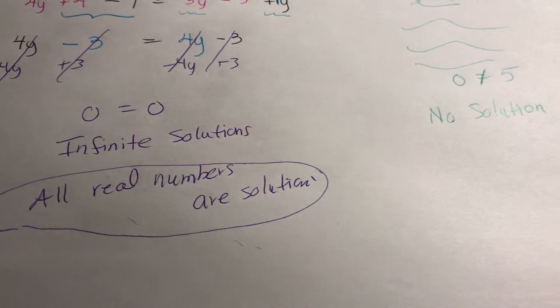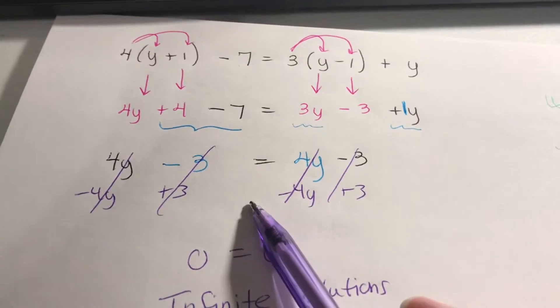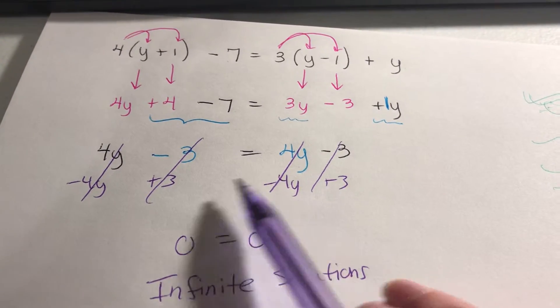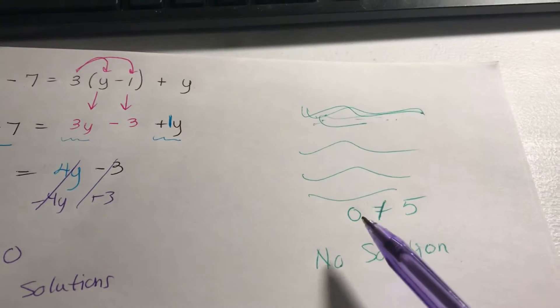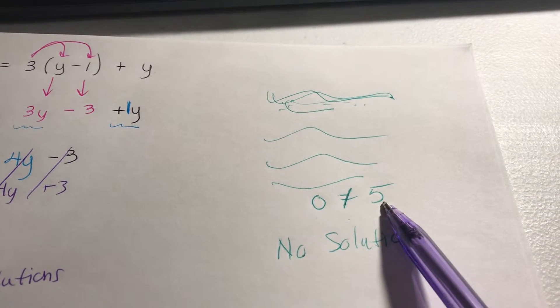All right and just so you know if you did like all of this work but like the 4y's cancel but maybe you had another number over here. Let's say when you did it you got 0 on the left and a 5 on the right.